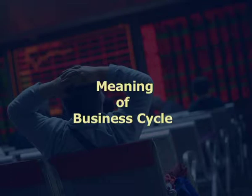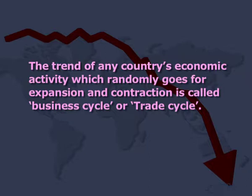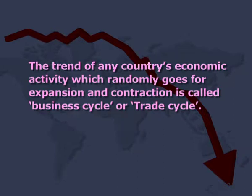It has been observed that there has been a long-run upward trend in GNP and large short-run fluctuations in the activity of an economy. These changes are noticed in the long run due to output, income, employment, and prices. The trend of high income, output, and employment has been called the period of expansion, and the trend of low income, output, and employment has been called contraction. After every interval, the fluctuation recurs in the economy, so the activity is called the trade cycle or business cycle. The trend of any country's economic activity which randomly goes for expansion and contraction is called a business cycle or trade cycle.